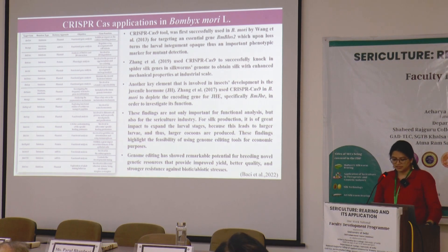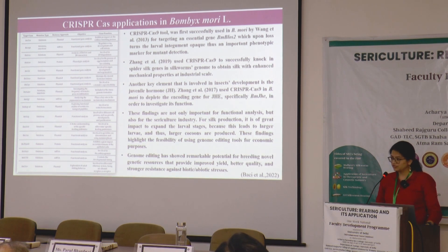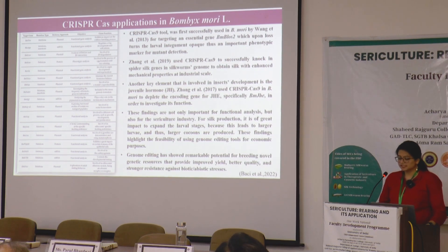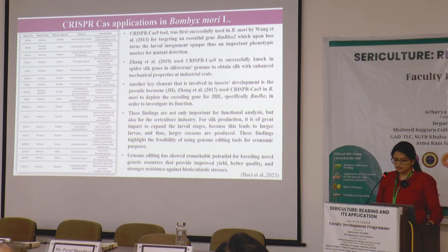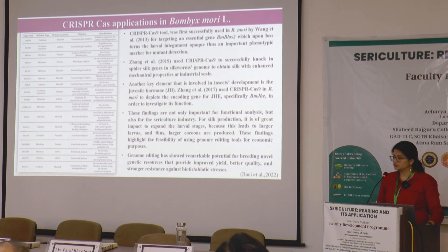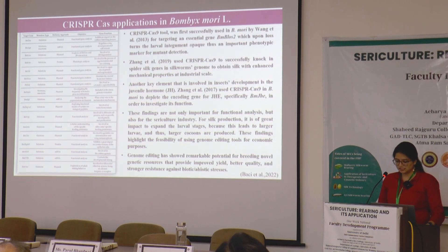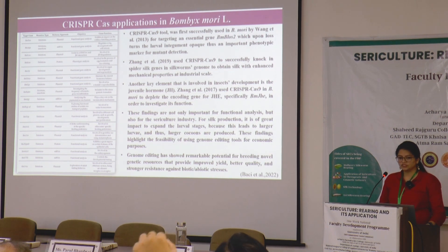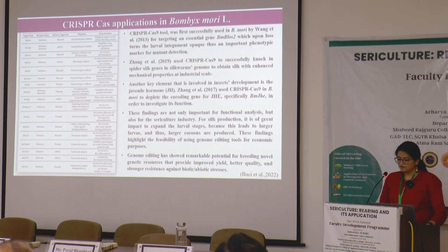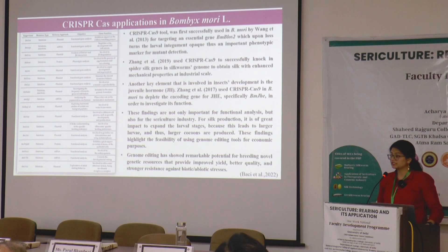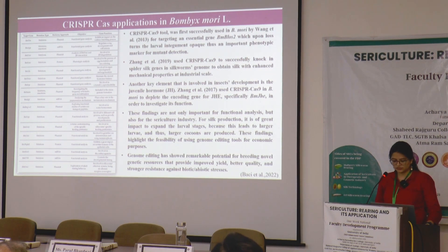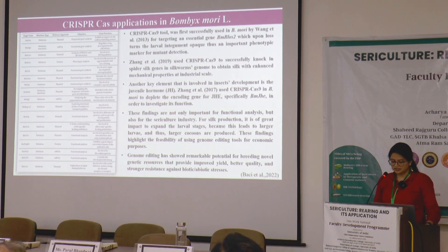Another key element involved in insect development is juvenile hormone. Zhang et al. in 2017 used CRISPR-Cas9 in Bombyx mori to deplete the encoding gene for juvenile hormone, specifically BMJHE, in order to investigate its function. For silk production, it is of greater impact to expand larval stages, as this leads to larger larvae and thus larger cocoons. These findings highlight the feasibility of using genome editing tools for economic purposes, including improved yield, better quality, and stronger resistance against biotic and abiotic stresses.